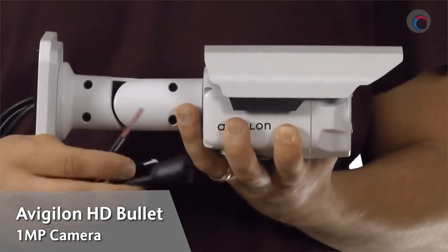The exact model number I'll be showing you today is the 1.0W-H3-B01-IR. Let's take a look at the camera now.